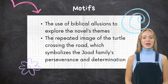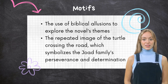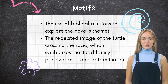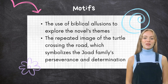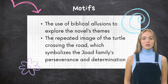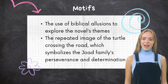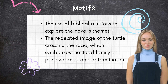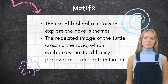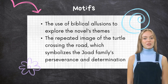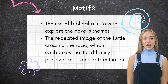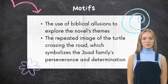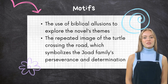The turtle in Chapter 3 of The Grapes of Wrath is a powerful symbol that mirrors the Joad family's journey from Oklahoma to California. It is a reminder of their resilience and perseverance, as they refuse to be deterred by obstacles and hardships on their journey. The turtle also serves as an example of the fragility and vulnerability of life, as its slow progress and exposed position on the highway suggests the precariousness of life in the face of external threats.